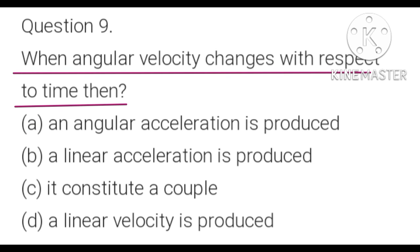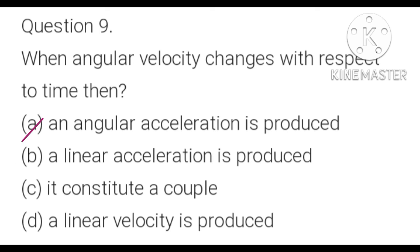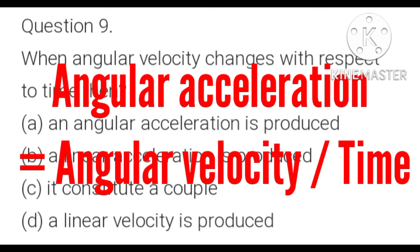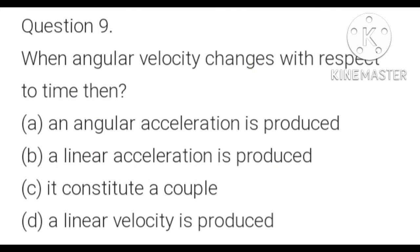Question 9: When angular velocity changes with respect to time, then: A) an angular acceleration is produced, B) a linear acceleration is produced, C) a linear acceleration is produced and it constitutes a couple, D) a linear velocity is produced. Angular acceleration equals the time rate of change of angular velocity. When angular velocity changes with respect to time, an angular acceleration is produced. So A is the correct option.